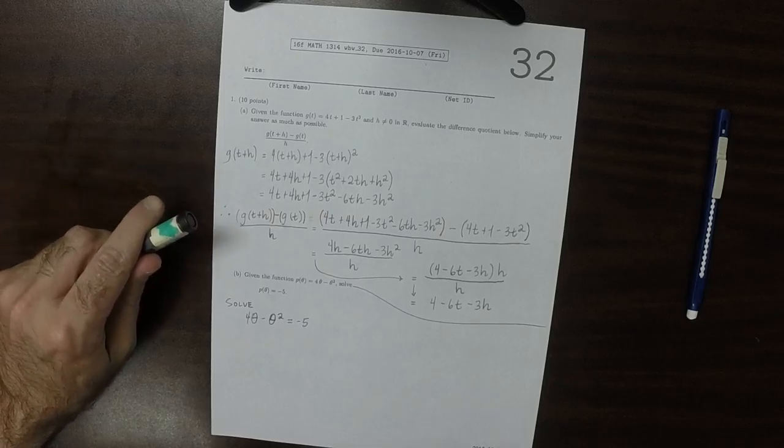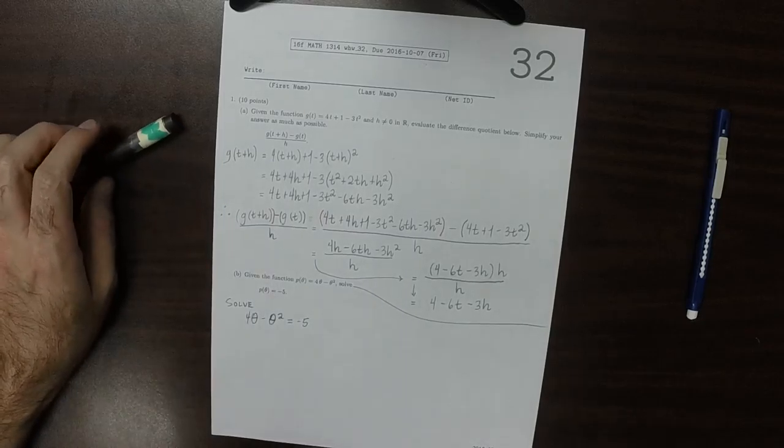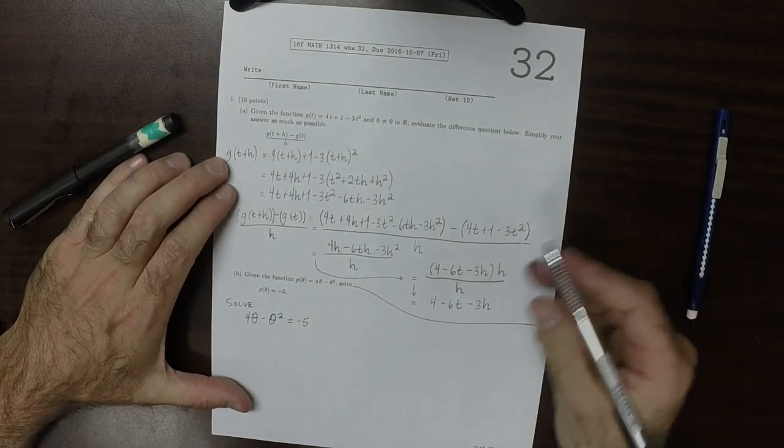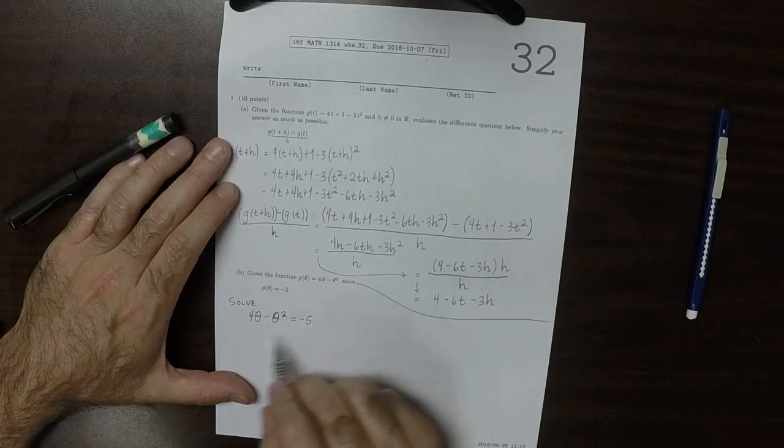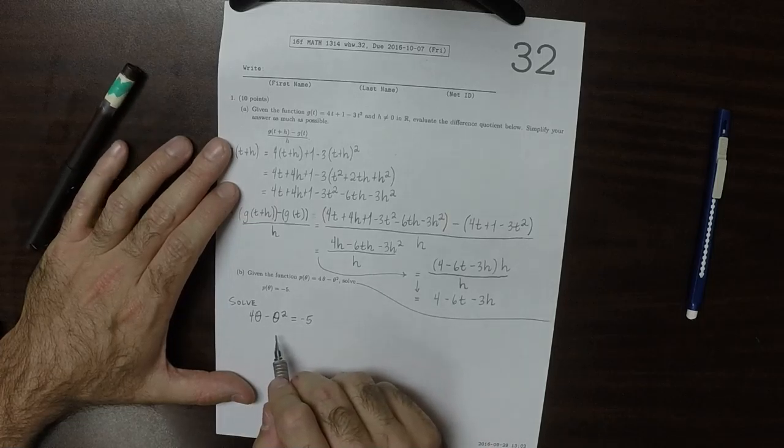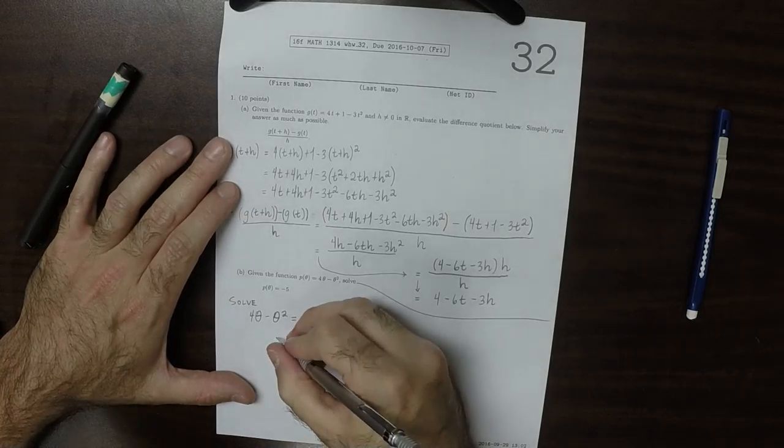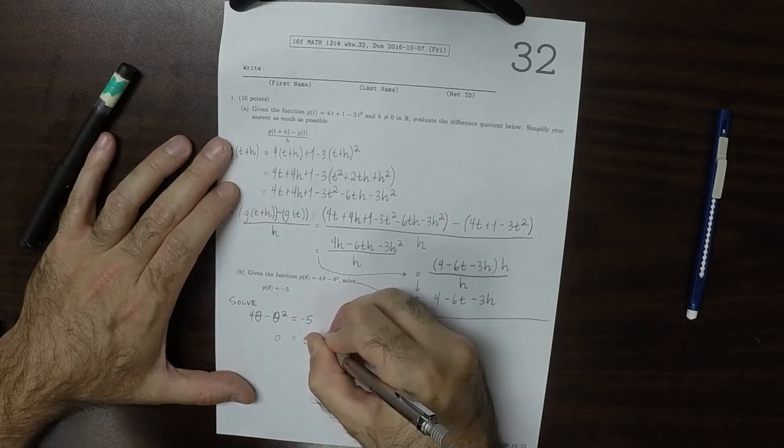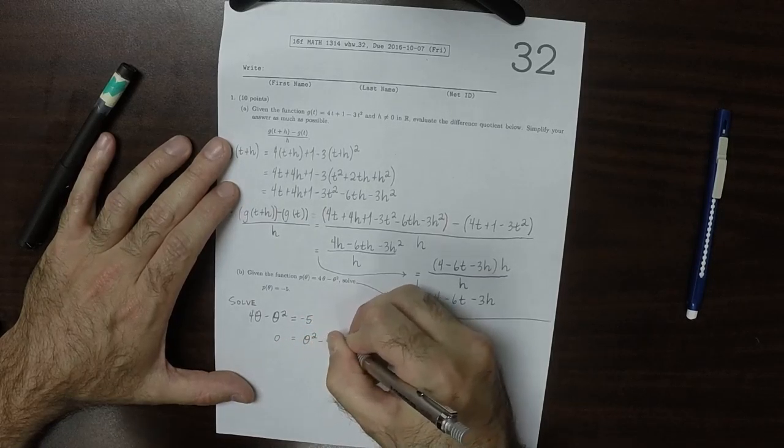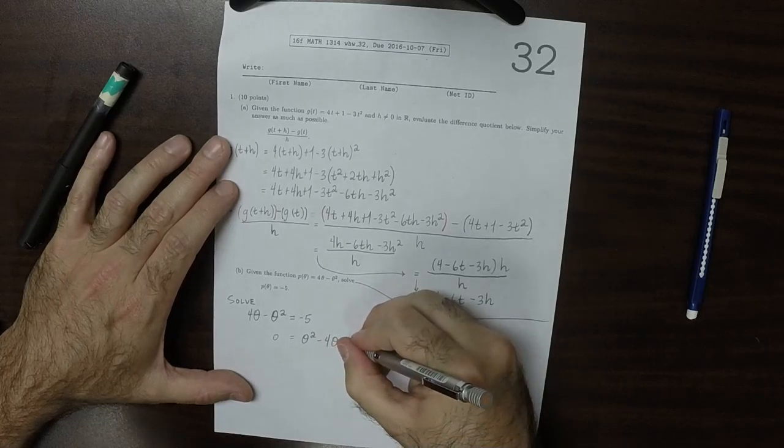And it's not mathematically any different than an x. It just is written as a theta. So this is really a quadratic equation in theta. So I'll move all the terms to the right-hand side. So this would be θ² - 4θ - 5.